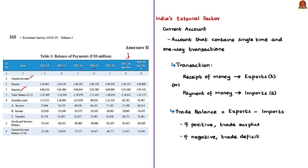Current account is the account that contains transactions that are made a single time and are one-way transactions. Transactions means the receipt of money or the payment of money. This receipt or payment happens only once and the transaction ends there. So these are single time and one-way transactions. When do we receive money?